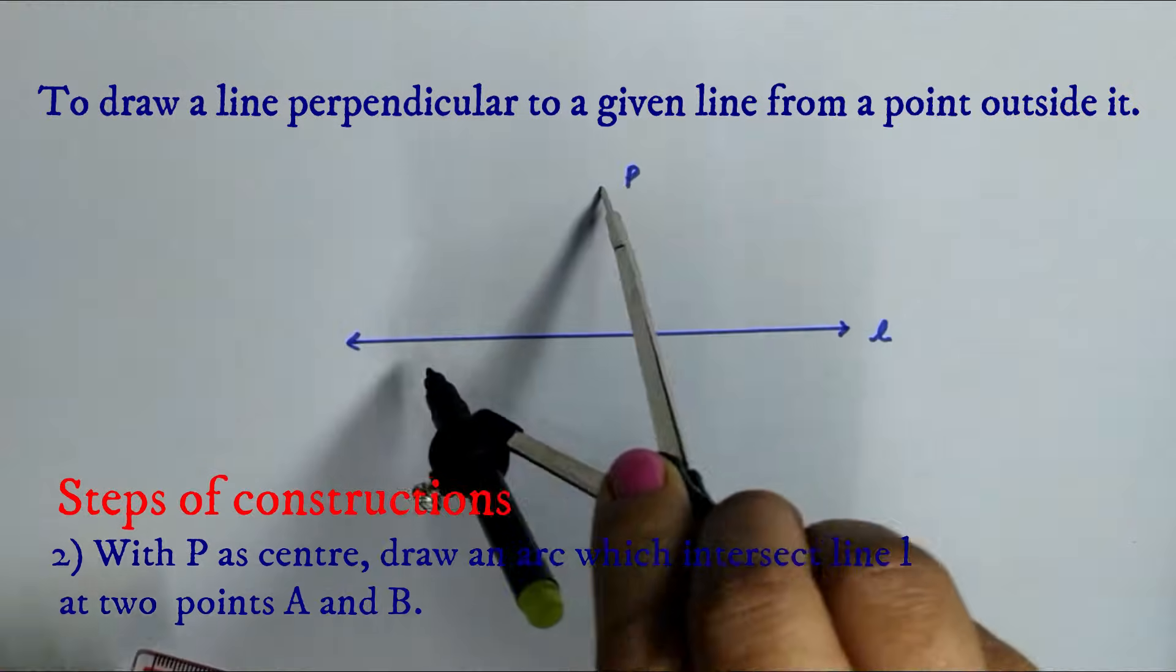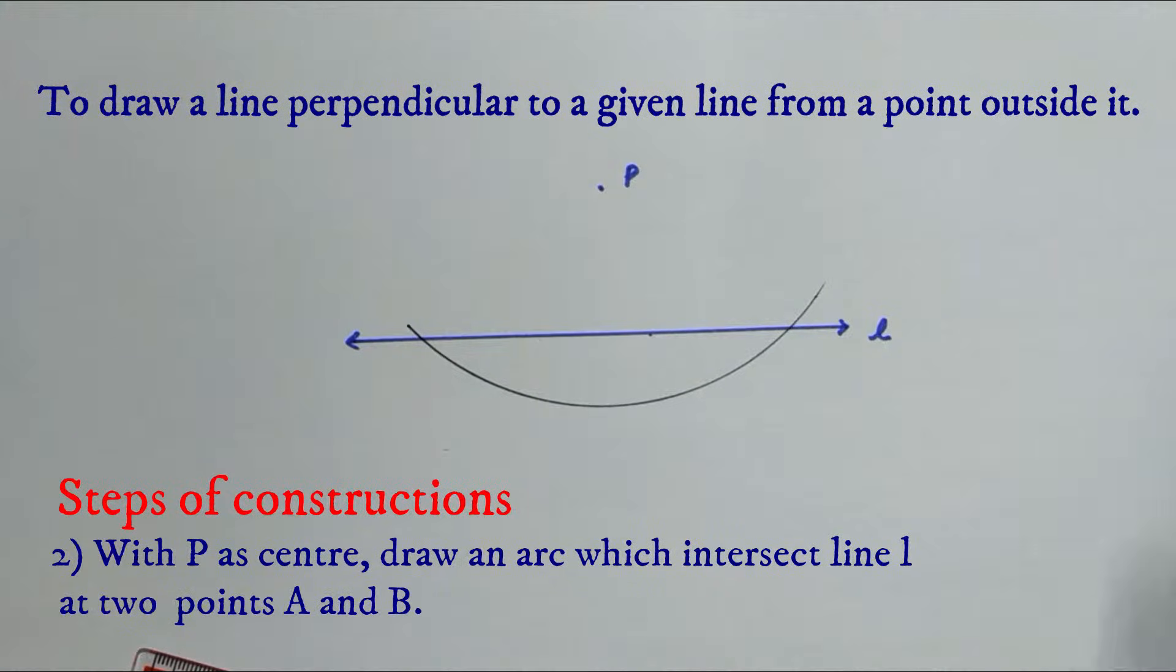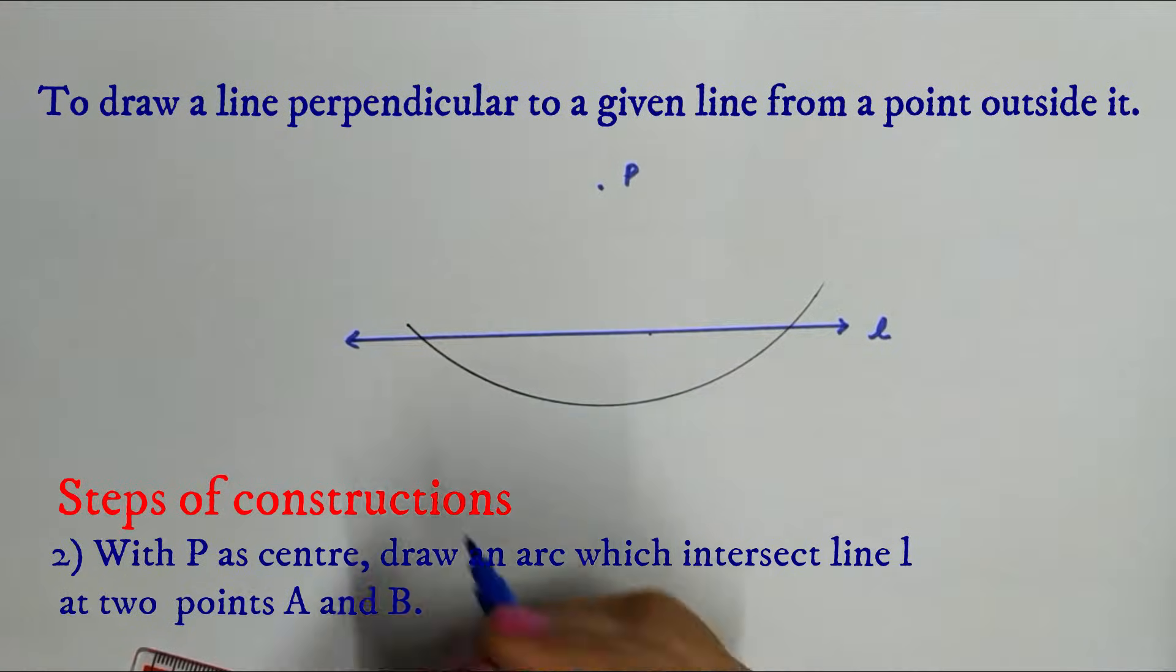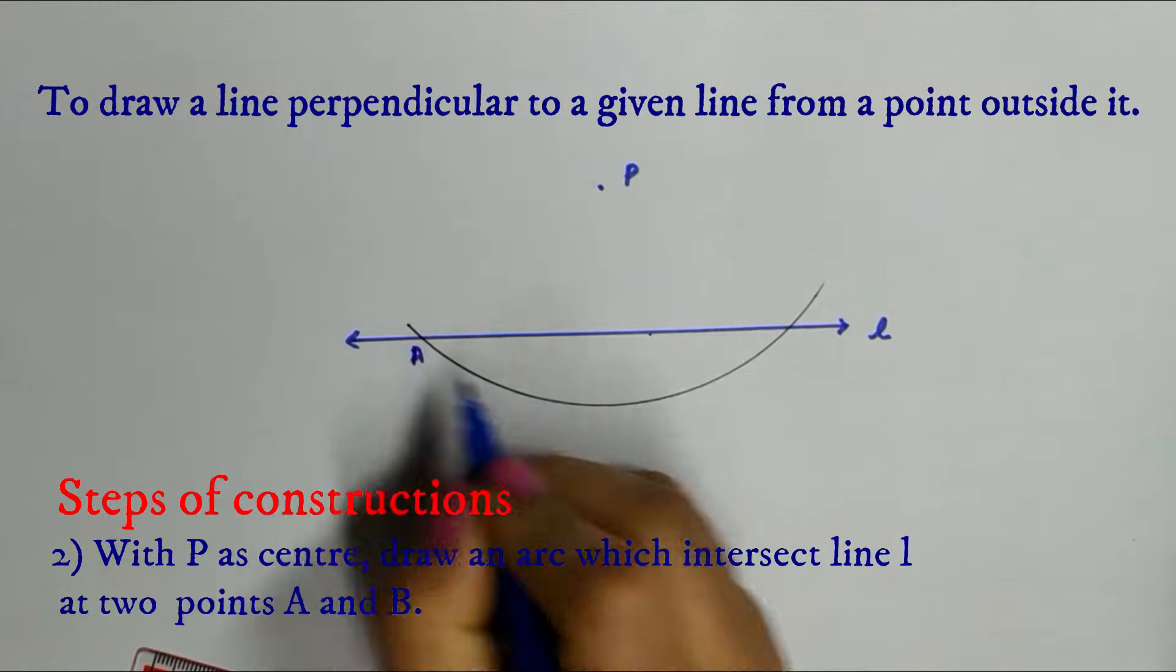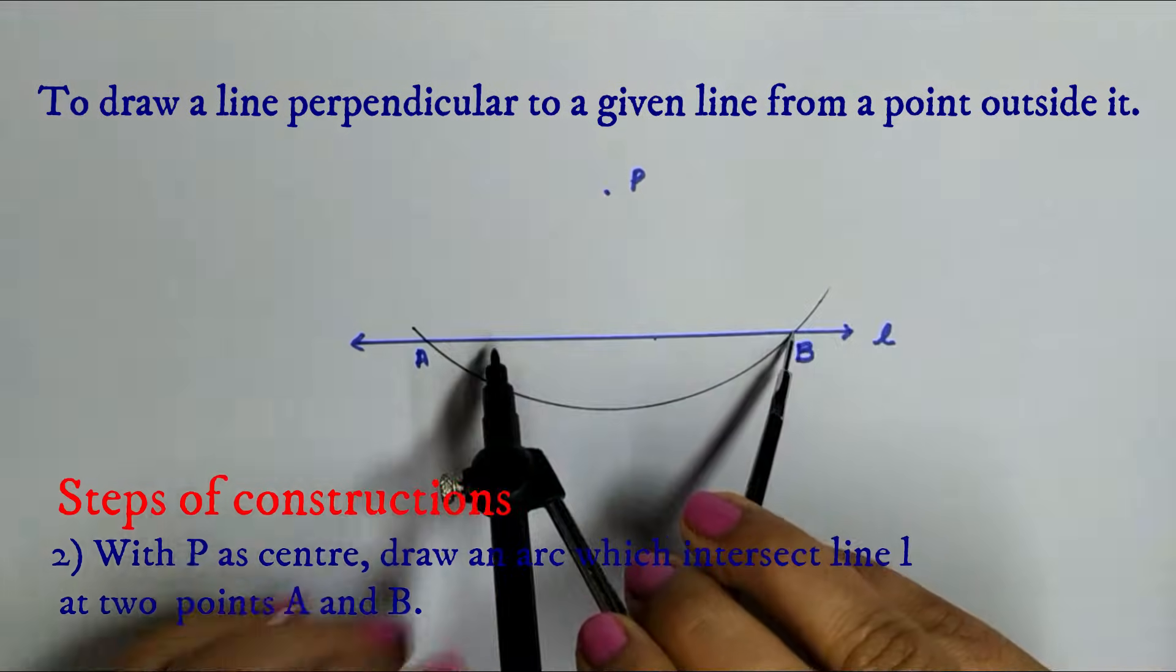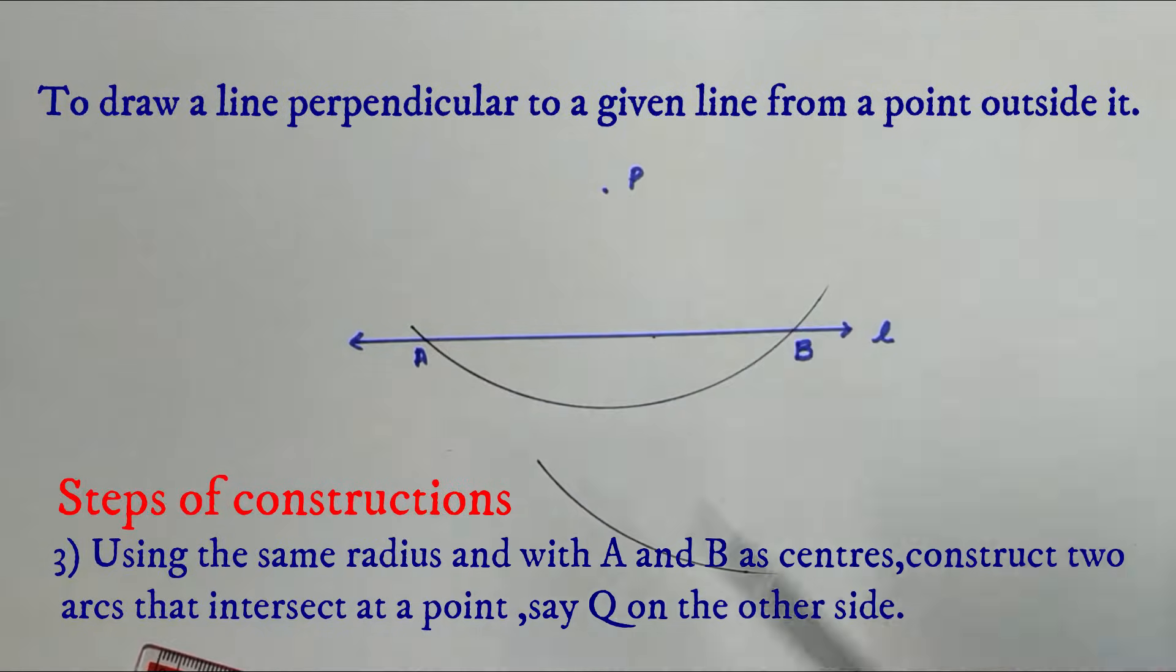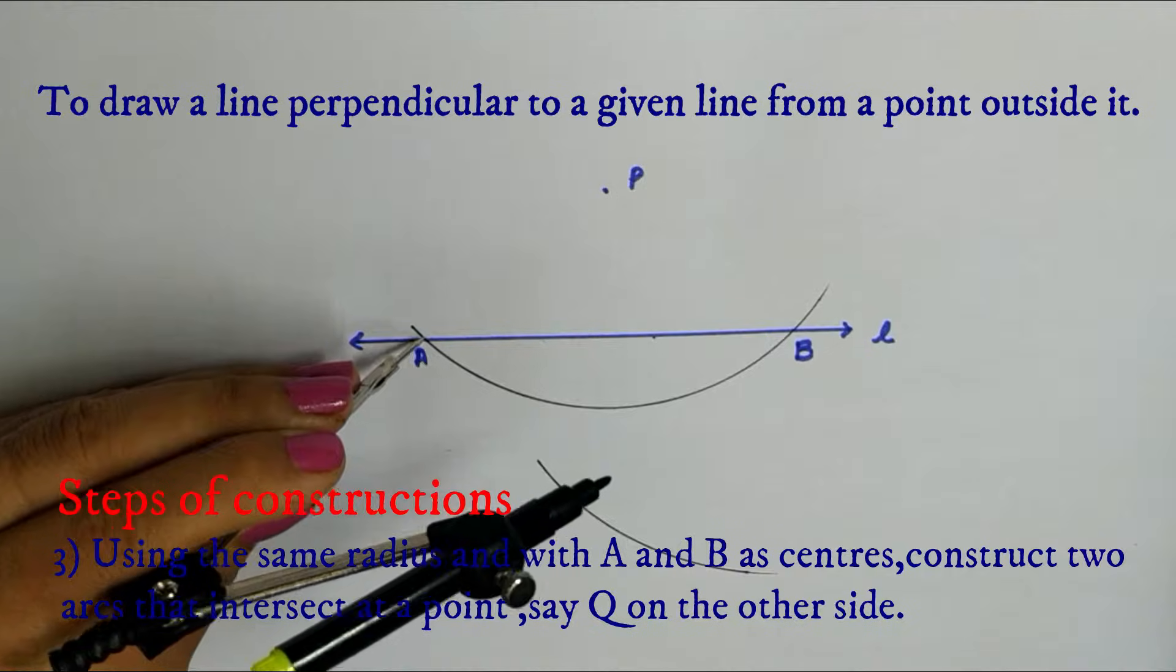With P as center draw an arc which intersects the line L at two points A and B. Using the same radius and with A and B as centers.